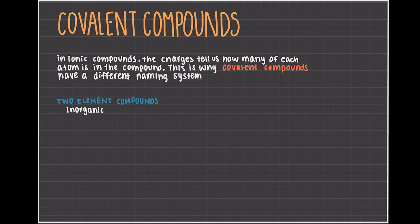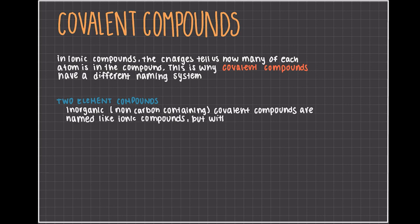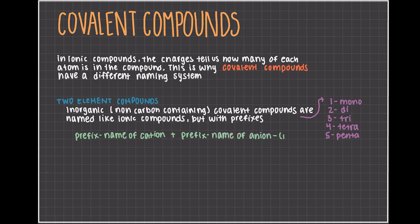For inorganic, non-carbon-containing covalent compounds, they are named like ionic compounds, but with prefixes to determine how many of each atom are in the compound. You first do the prefix, then the name of the cation, and then another prefix for the name of the anion, but with an ending of 'ide'. This list is a short list of prefixes that we will be using today, but you can find a compiled list on the ChemTalk website. For today's uses, 1 is mono, 2 is di, 3 will be tri, 4 is tetra, and 5 will be penta.